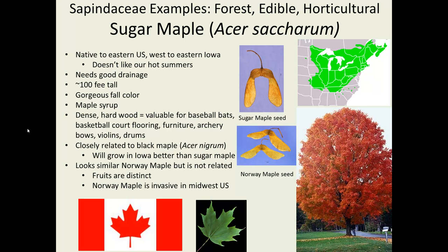The sugar maple, Acer saccharum, is in this family. It is widely distributed in Canada and the eastern U.S., but doesn't really make it far into Iowa — it doesn't like hot, dry, and windy conditions. There is a quite similar species, Acer nigrum, which grows more widely. Another species that looks like sugar maple but is not related is the European Norway maple. The Norway maple seeds are quite large, two to three inches wide, with seed halves widely separated, whereas the sugar maple seed is quite small, about an inch to an inch and a quarter, with the seeds drooping down almost parallel to one another.